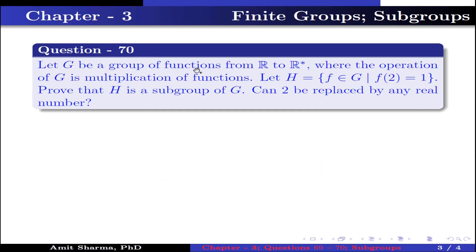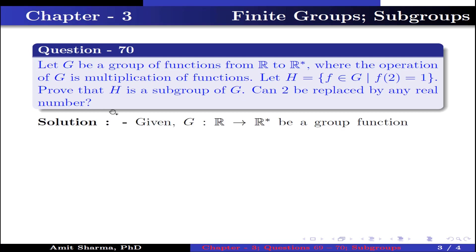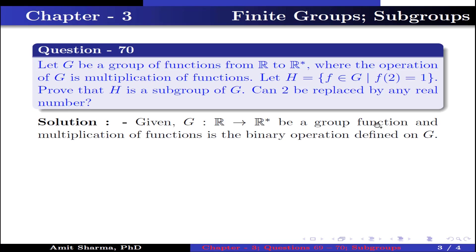Question 70: Let g be a group of functions from ℝ to ℝ*, where the operation on g is multiplication of functions. Let h contain all f in g such that f(2) = 1. Prove that h is a subgroup of g. Can 2 be replaced by any real number?